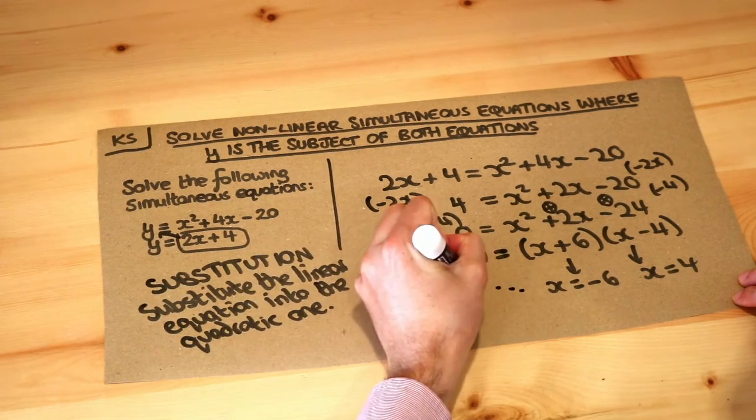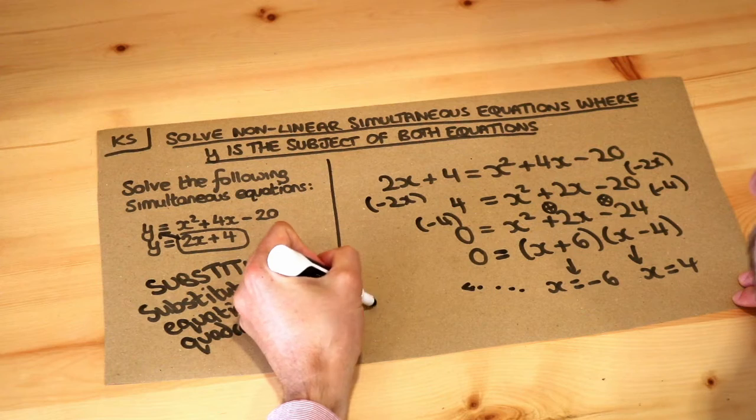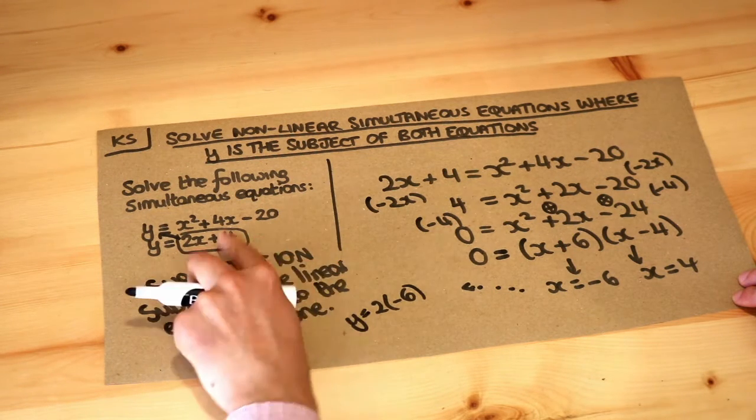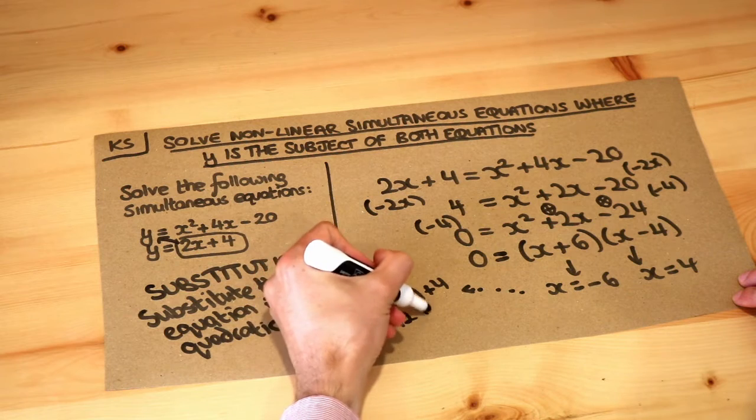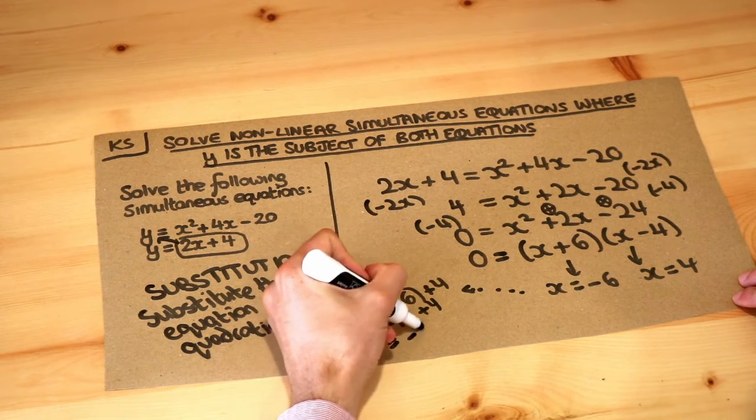So the minus 6, if I do 2 times minus 6 plus 4, that's minus 12 plus 4, which is equal to minus 8. So in this particular case, y is equal to minus 8.